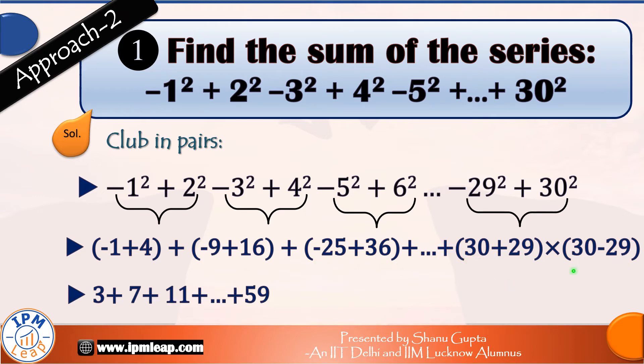For the final pair we can even use the formula a square minus b square is equal to a plus b into a minus b. 30 plus 29 is 59 and 30 minus 29 is equal to 1. So the net value of a final pair is 59.